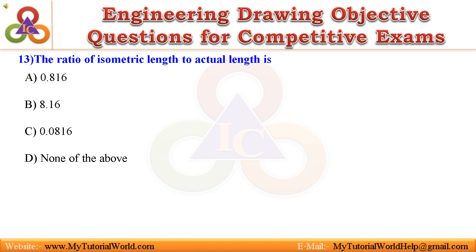13. The ratio of isometric length to actual length is: A. 0.816. B. 8.16. C. 0.0816. D. None of the above. Answer is: 0.816.